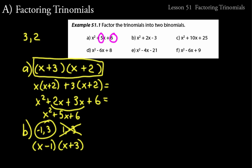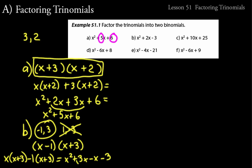The order of the binomials doesn't matter, so (x + 3)(x - 1) is equally correct. We can expand to verify: x(x + 3) - 1(x + 3) = x² + 3x - x - 3 = x² + 2x - 3. The middle terms add to 2x, giving us back the original trinomial, confirming that (x - 1)(x + 3) is correct.